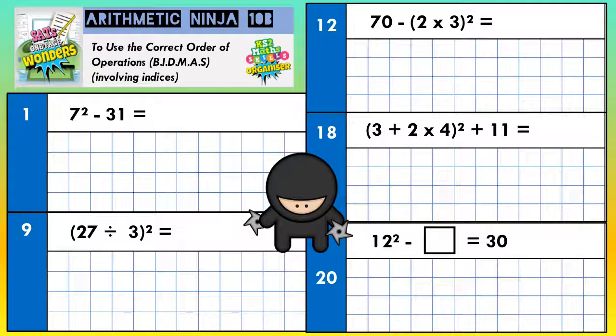Remember, we've got B, O or I, D, M, A, S. Some people call it BODMAS, some people call it BIDMAS. It means the same thing. B stands for brackets, you've got to do them first. O and I stand for order or indices, and that's little squared and little cubed, which we've got to be careful of here. D stands for divide, M stands for multiply, A is add, S is subtract.